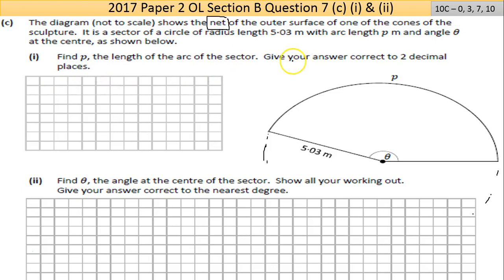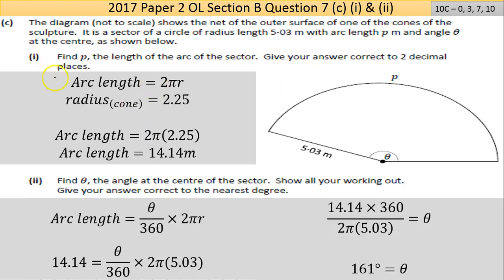Find p, the length of the arc, to two decimal places. The arc length equals 2πr. That's the circumference formula. The radius of the cone is 2.25, so arc length = 2π(2.25) = 14.14 meters. You may need to go back over this video—I struggled with this at first until I realized it was a net.